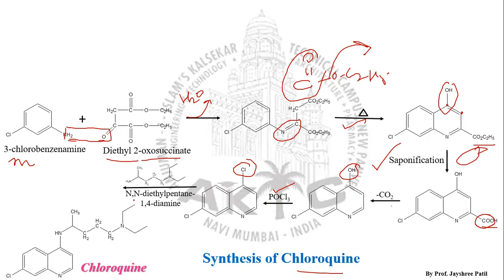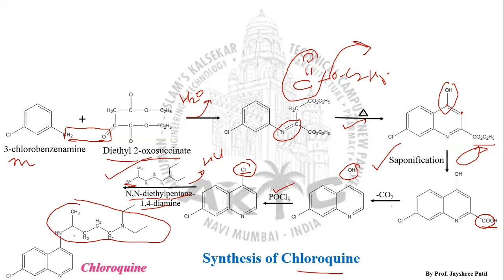This chlorinated quinoline is then reacted with the side chain, which is N,N-diethylpentane-1,4-diamine. The Cl is substituted by this side chain with the loss of HCl — the Cl and one hydrogen are removed as HCl — and this side chain takes the position at the fourth position of the quinoline ring, giving us chloroquine.